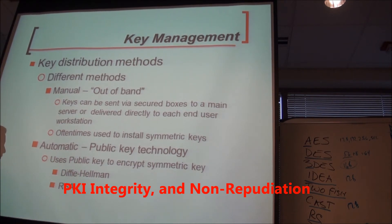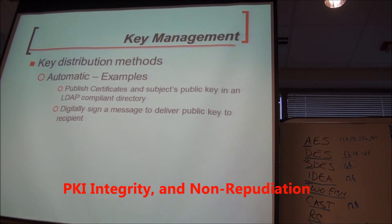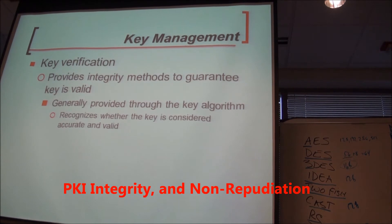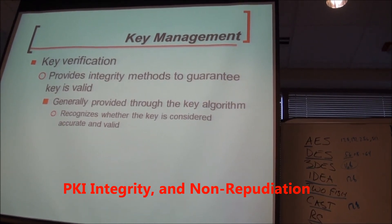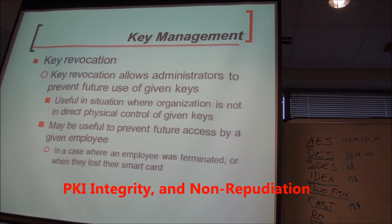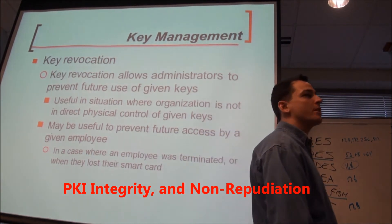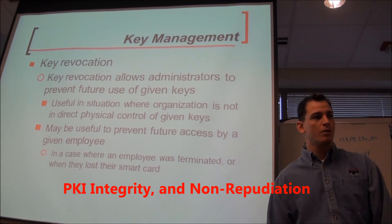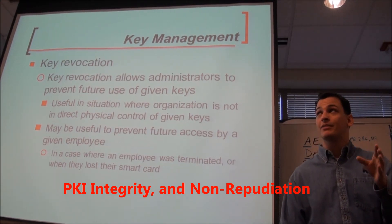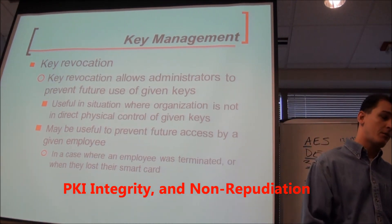You could use a key exchange protocol like Diffie-Hellman or RSA. Key distribution methods include signing the message and emailing the public key, or getting it out of a directory. For key verification and revocation, there's OCSP — Online Certificate Status Protocol — which is an automated way of checking your Certificate Revocation List (CRL) to see if a certificate is on the revoked list.